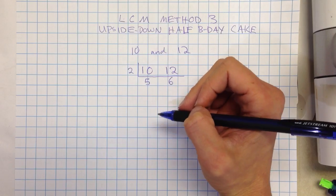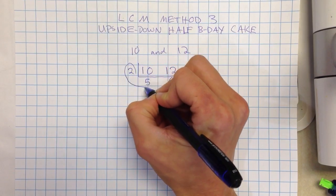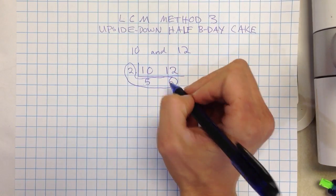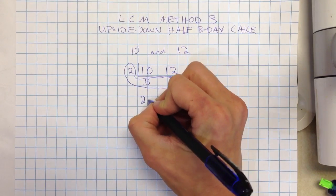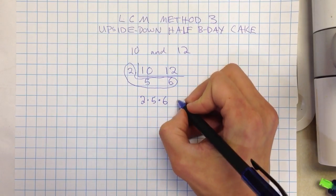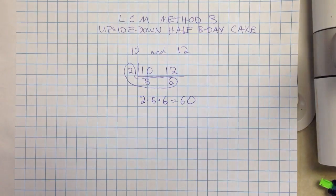But if I want to do LCM, I'm going to think of the L. I'm going to kind of make a bubble L around everything that's on the outside of the cake. So the 2, the 5, and the 6. Then I simply would multiply 2 times 5 times 6. 2 times 5 is 10. 10 times 6 equals 60. That's our LCM. So you can see it's pretty quick.